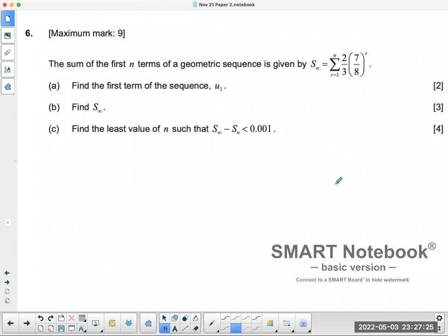All right, now let's take a look at number six. By looking at the question, you see a sigma notation. From part B, you also see the infinite sign, so it's an infinite geometric series. So these are questions on sequence and series.